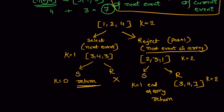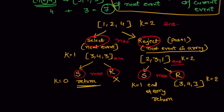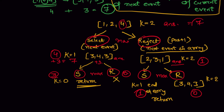Since at every event we have two options — select or reject — it forms a tree-like structure. The complexity to iterate over this whole tree is 2 to the power n. At each select and reject we take the maximum, which becomes the answer for that event. For example, selecting [1,2,4] gives 4, then selecting [3,4,3] gives 3 for a total of 7. Rejecting on the other path gives 1. The max of 7 and 1 is 7, and that is how the answer comes out to be 7. Let's code up to this point.